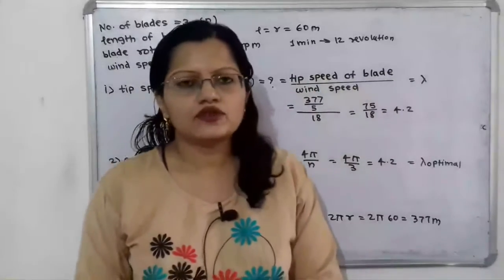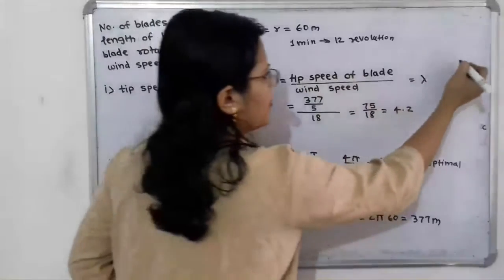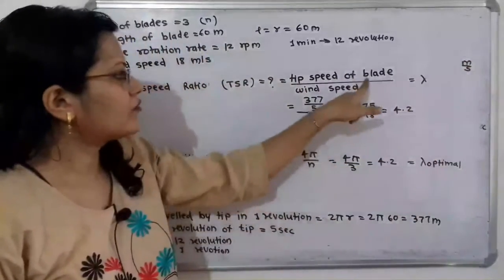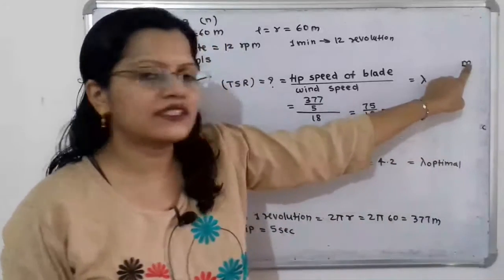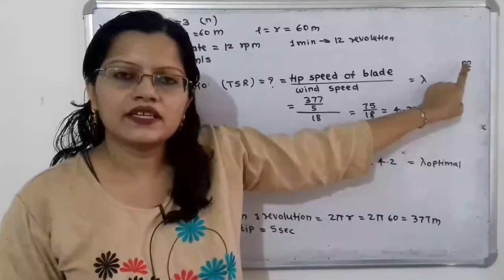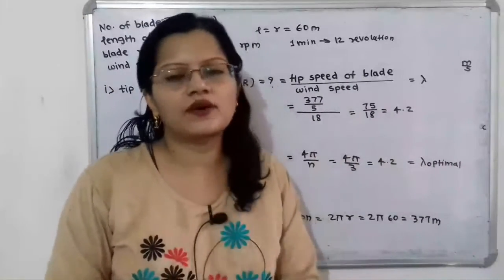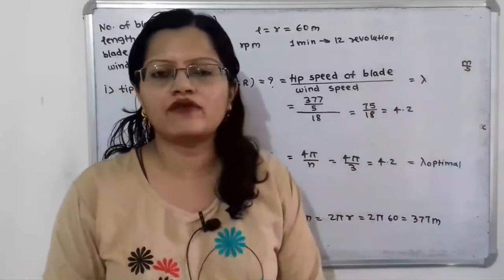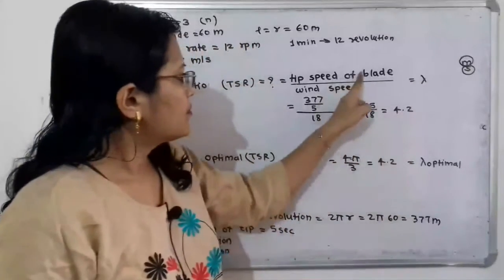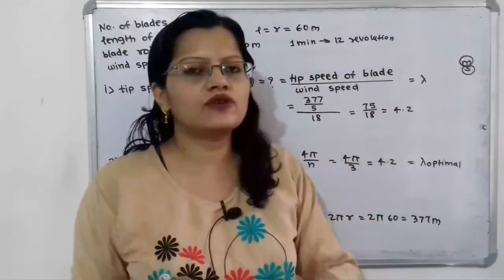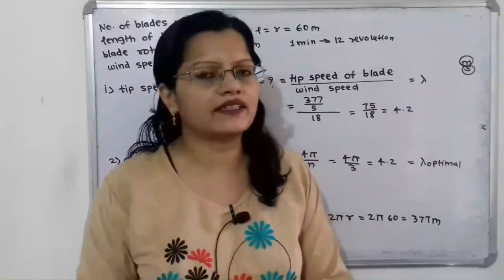The tip speed ratio is defined as the tip speed of the blade divided by the wind speed. The wind speed is given, so we need to find the tip speed of the blade in meters per second. To do this, we will find the distance traveled by the blade tip in one revolution, and the time required for one revolution, then take their ratio.